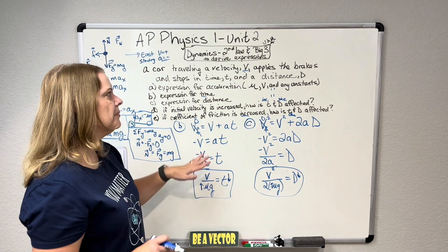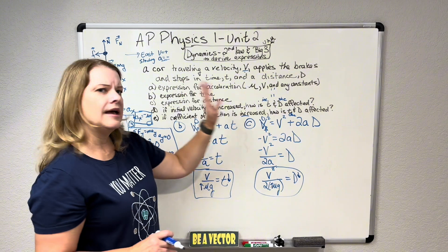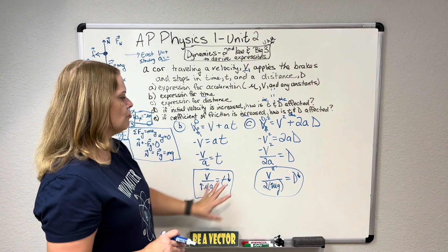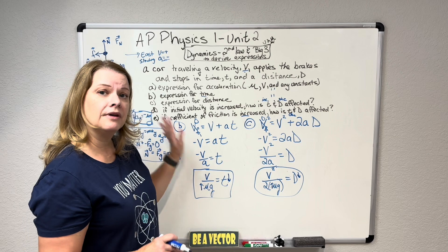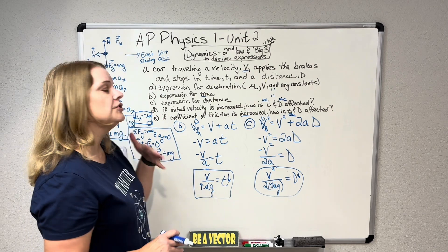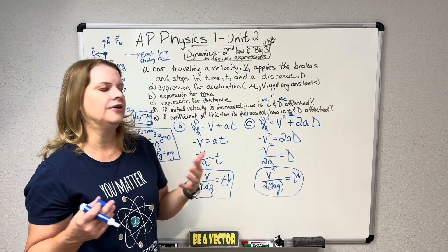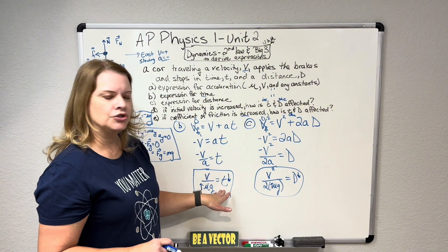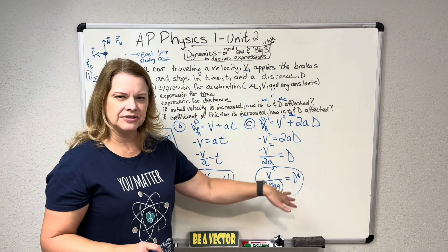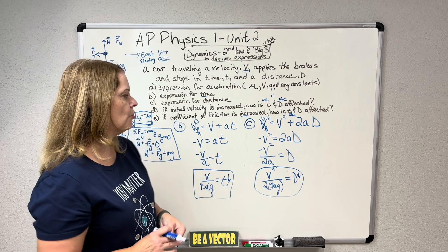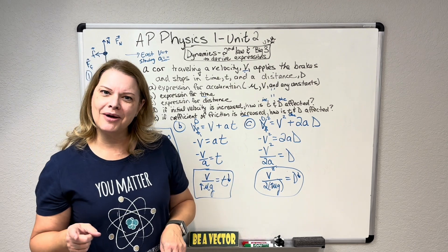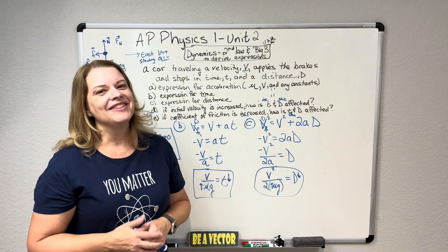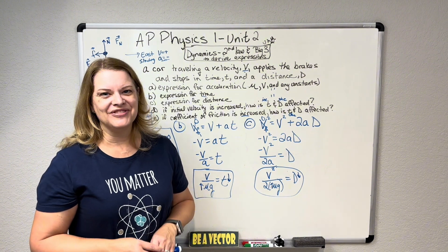I hope that helps explain how you use Newton's Second Law and the UAM equations — the Big 3 — to find and derive expressions without numbers, and then how to use the concept of 'if you change something in this expression, what happens to time and distance?' I hope force problems aren't hitting you too hard this unit and that they're becoming easier for you. Thank you for watching, and happy physics-ing.